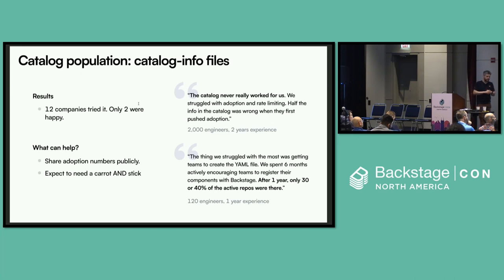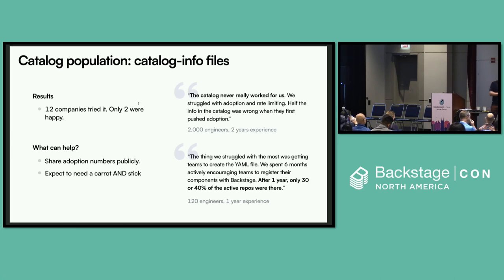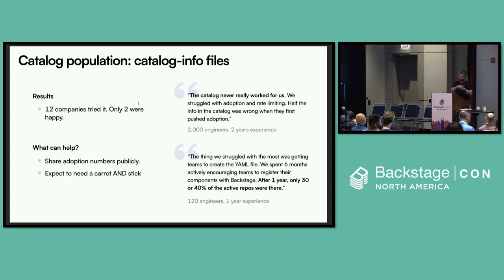Twilio are reporting catalog completeness numbers inside Backstage in a very public way, which is helping them drive adoption. They have a feature called Catalog Health that reports things like what percentage of components have a Snyk annotation or a PagerDuty annotation. That seems to be really helping them — they spoke about this at the Autodesk Developer Productivity Conference, which is recorded on YouTube. If you want to have success with the Backstage catalog, it seems you need some kind of top-down support — a carrot and a stick, whether public metrics or even locking down deployment of new services to things in the catalog.